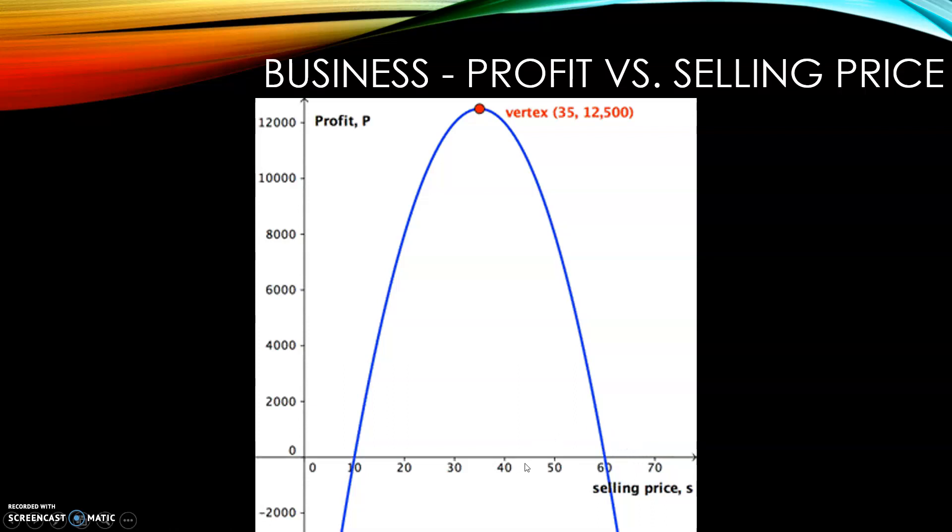And then you could find the optimal price that I want to sell that item for is exactly between $10 and $60. In this case, $35. And then in this particular business model, it gives a profit of $12,500 for that product. And so we can use that.